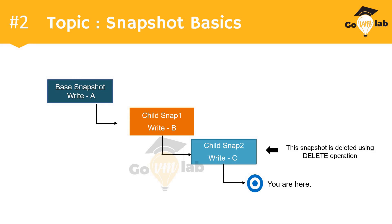Let me explain this diagram. We have a VM where the user has taken a base snapshot and written data value A. Then the user took a new snapshot named child snap 1 with data value B, and then another snapshot named child snap 2 with data value C. From the snapshot tree perspective, it is exactly the same scenario we discussed in question number one.